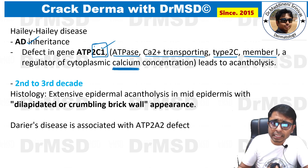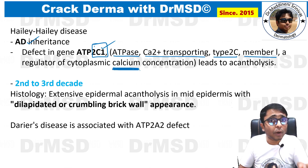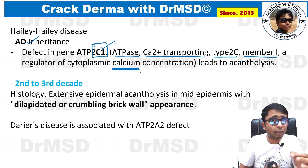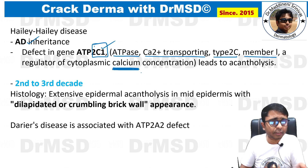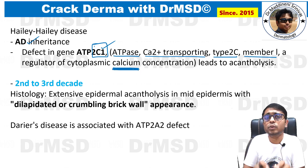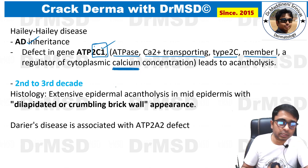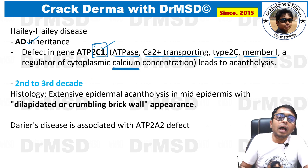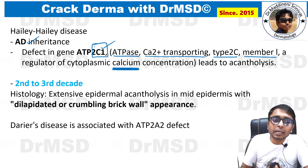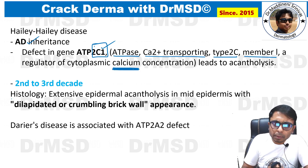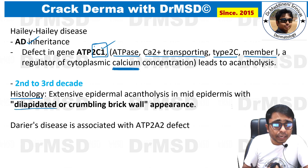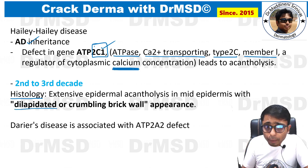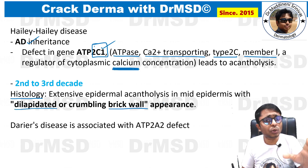Calcium is required for the proper metabolism inside the keratinocytes. If it is defective, there is going to be loss of cohesion between the keratinocytes. In histopathology, we can see a dilapidated brick wall appearance in the case of Hailey-Hailey disease.